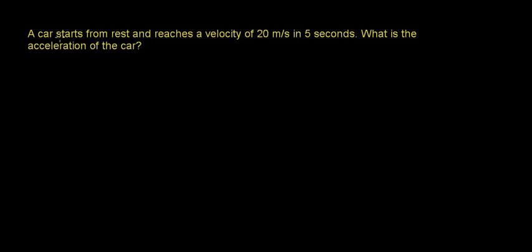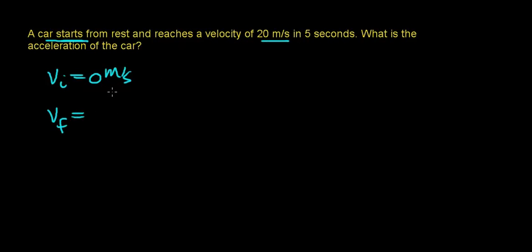Let's summarize the information given in the problem. The car starts from rest, which indicates that the initial velocity is 0 meters per second. The car reaches a final velocity of 20 meters per second, and the time it takes to go from 0 to 20 meters per second is 5 seconds. So the change in time is 5 seconds.